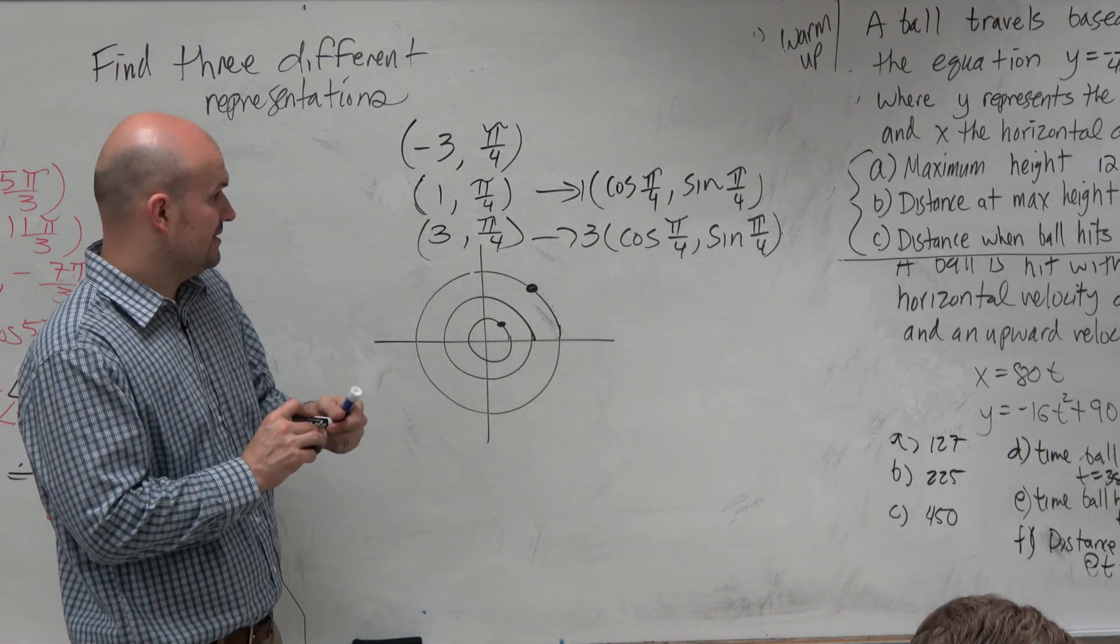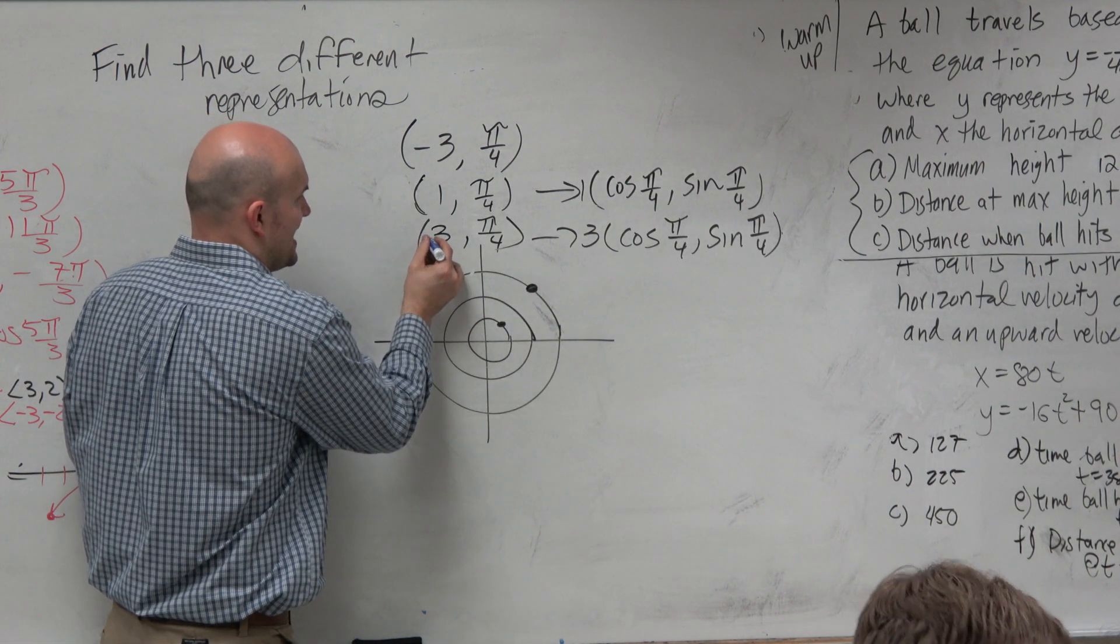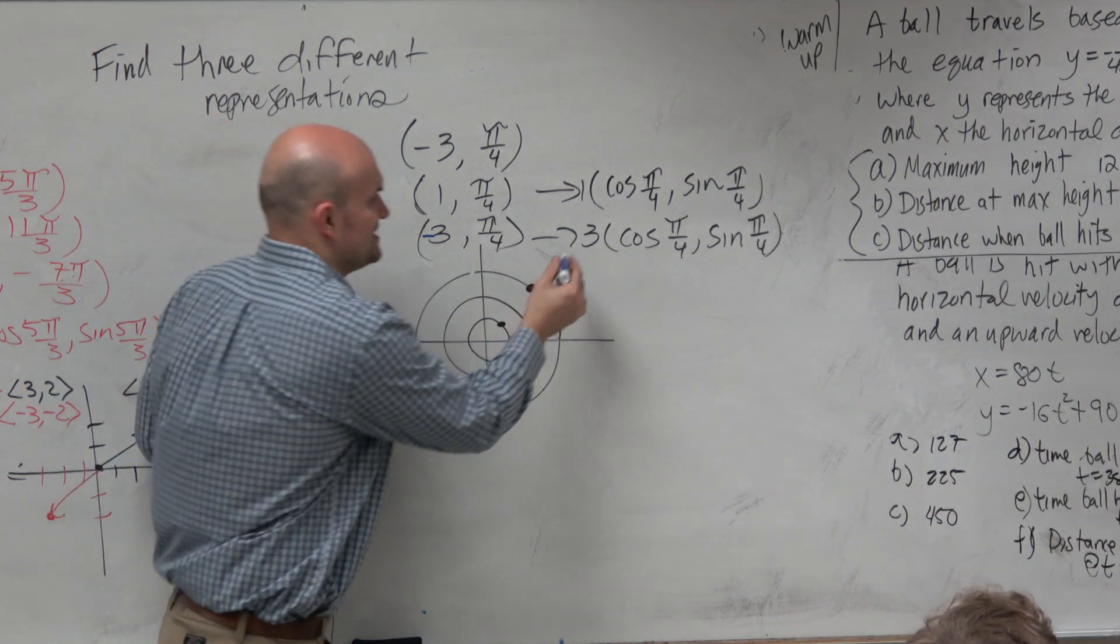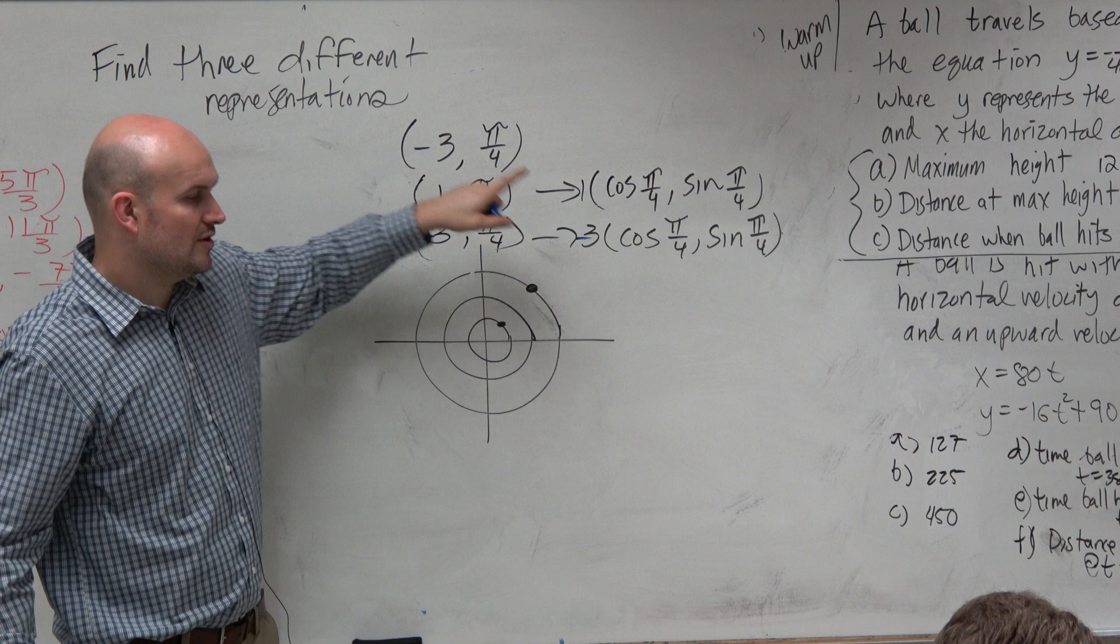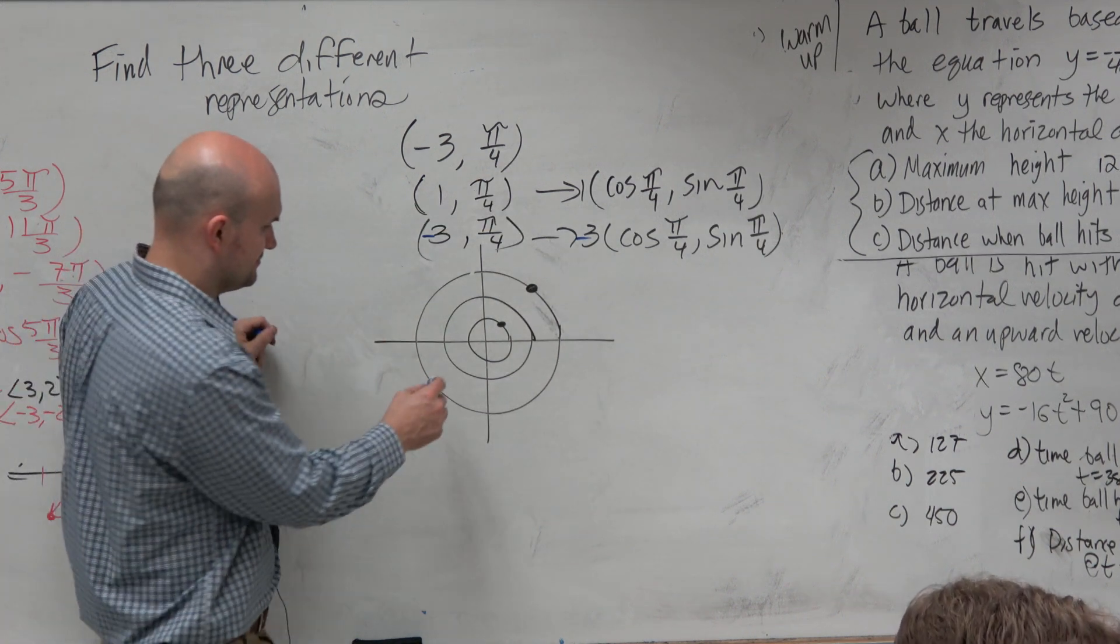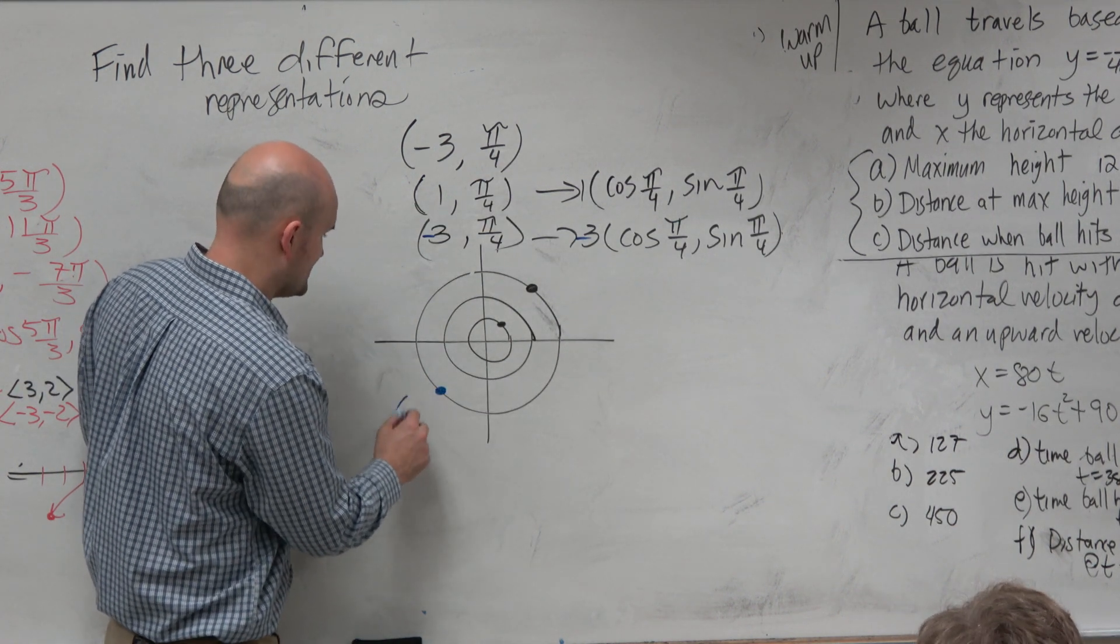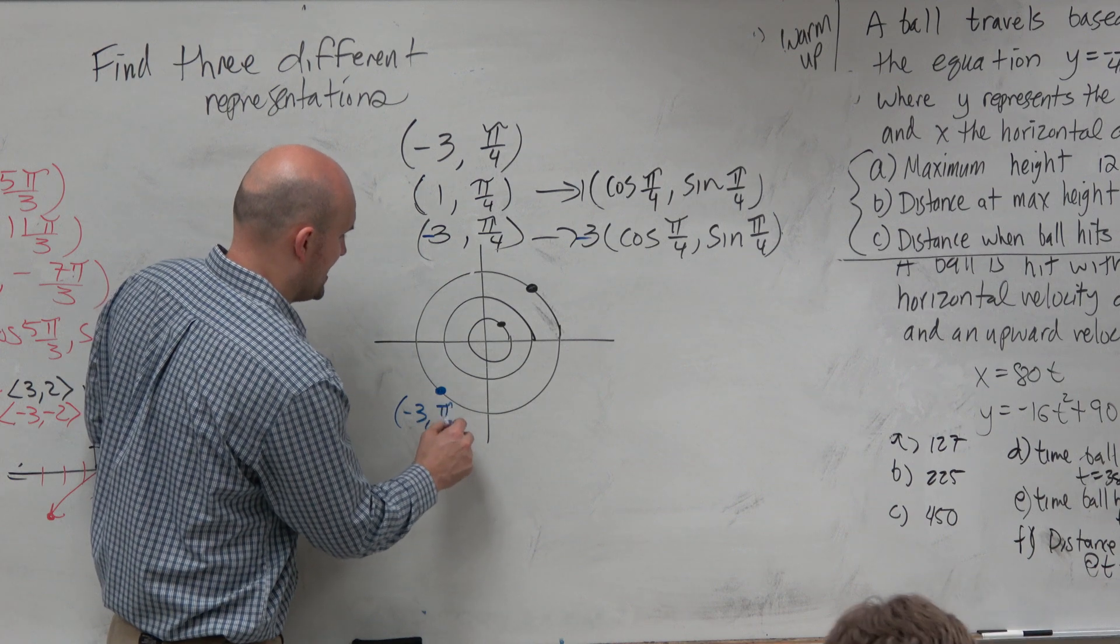But again, we don't have a 3. We have a negative 3. So if that's negative, where is this point actually going to be? Reflected about the origin. So here is the point, negative 3 π/4.